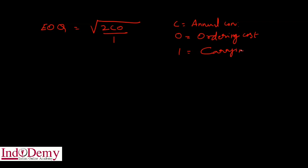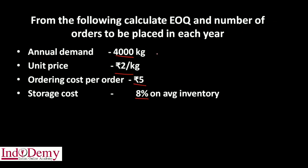The consumption is 4000 kg, ordering cost is ₹5. We need to calculate the carrying cost per unit I.